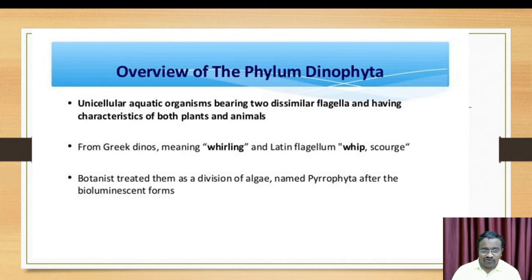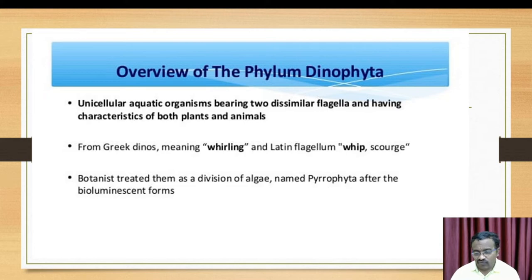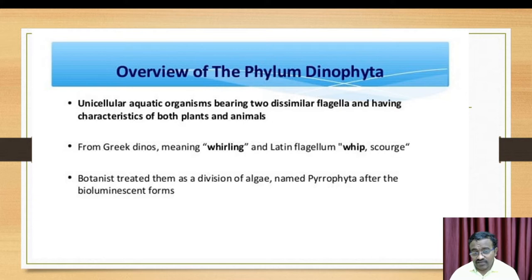The dinoflagellates are unicellular aquatic organisms bearing two dissimilar flagella and having characteristics of both plants and animals. The term 'dinoflagellates' means 'dinos' — whirling — referring to the flagella which produces a whip-like movement. Botanists initially treated them as algae and later reclassified them as dinoflagellates.